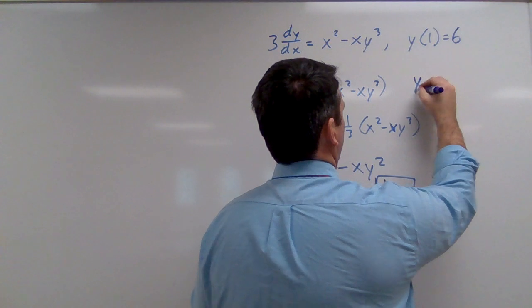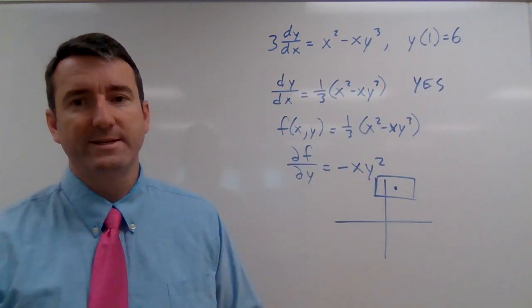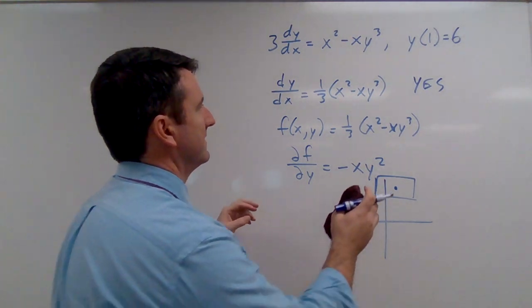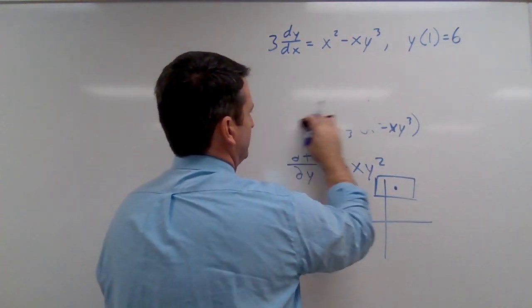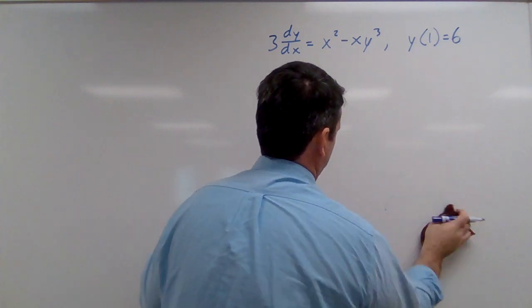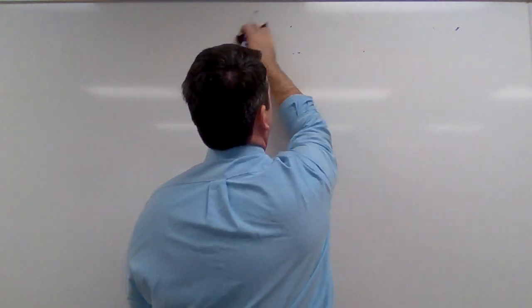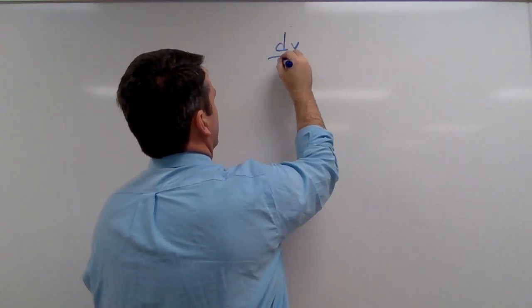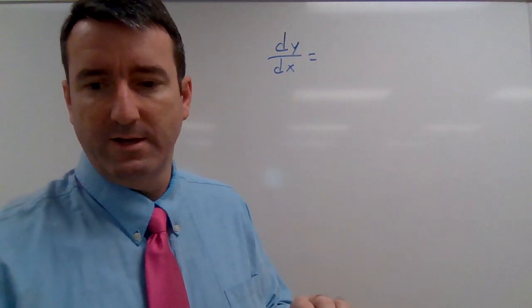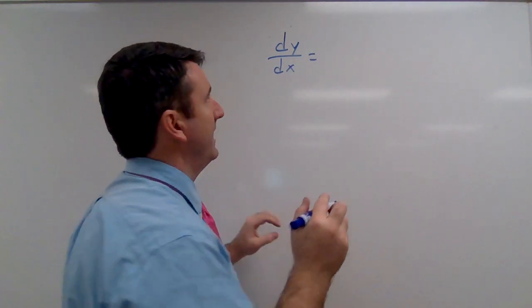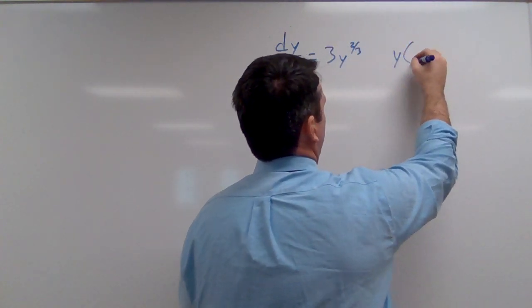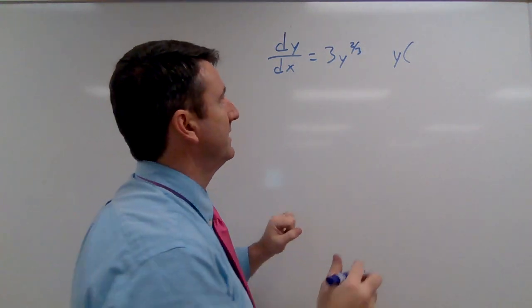Alright, now let's look at our other example. Which was dy/dx equals 3y to the two thirds.